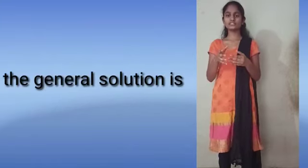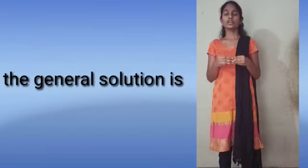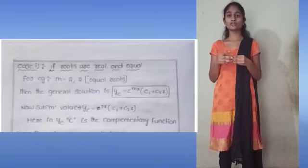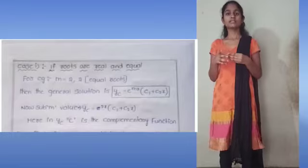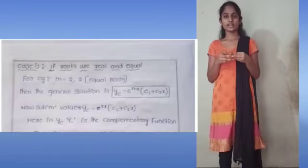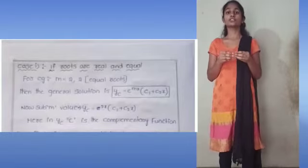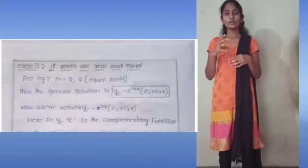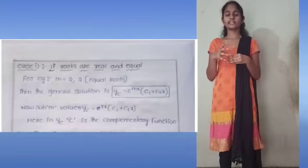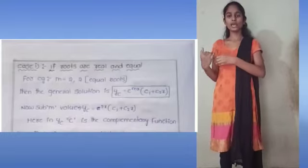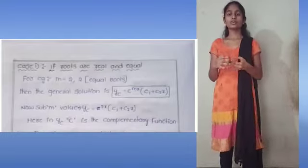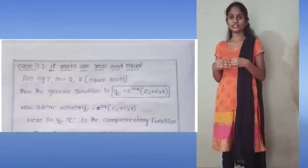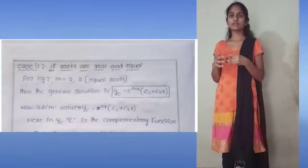When the roots are real and equal, the general solution is YC equals e^(MX) multiplied by (C1 plus C2·X). This is the general solution for real and equal roots. Whatever roots we obtain, we substitute them for M. Here YC is the complementary function.